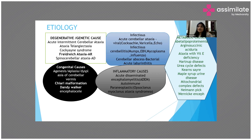Genetic or degenerative causes are also important. These include syndromes like Friedreich's ataxia, ataxia-telangiectasia — which is a neurocutaneous syndrome — acute intermittent cerebellar ataxia, and spinocerebellar ataxia. They are either inherited in an autosomal recessive or dominant pattern. These are the genetic causes.